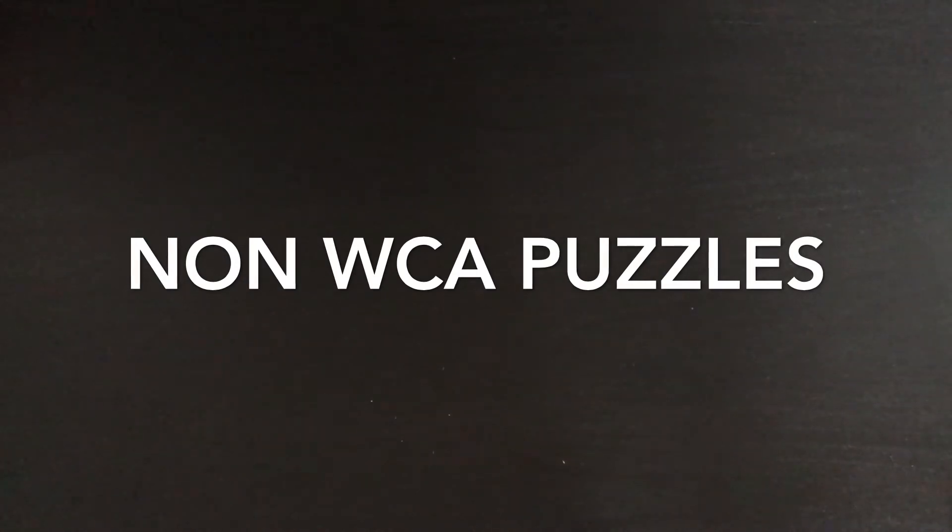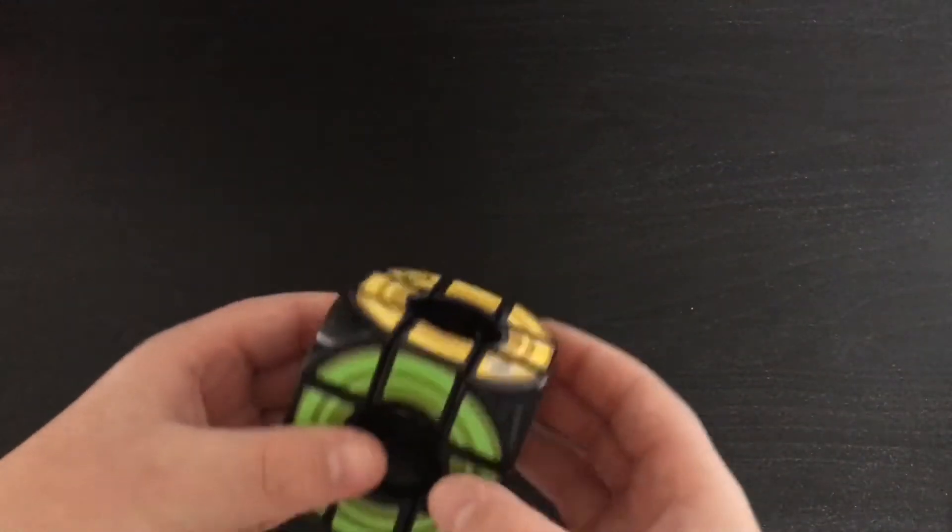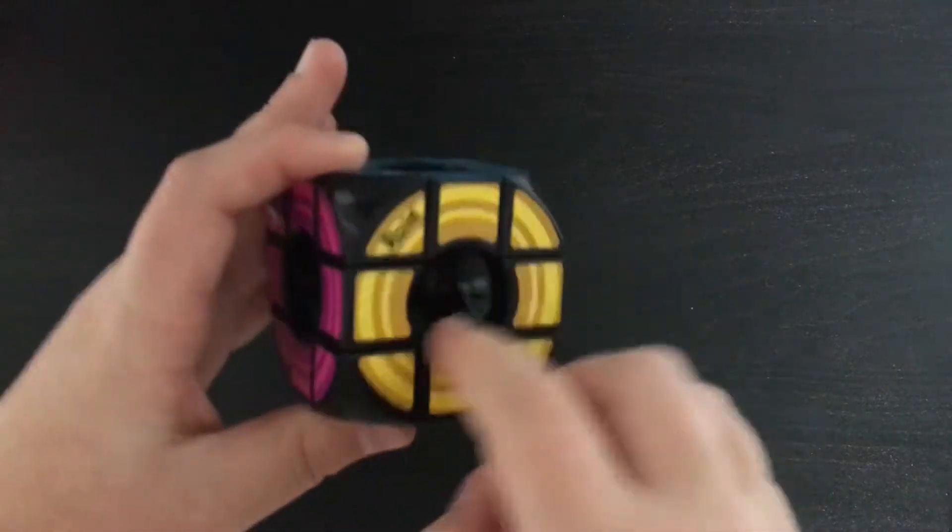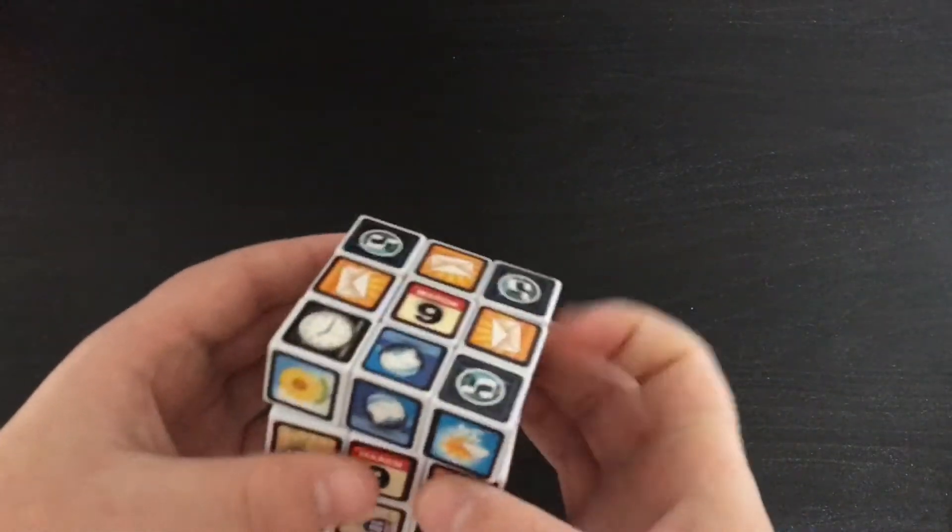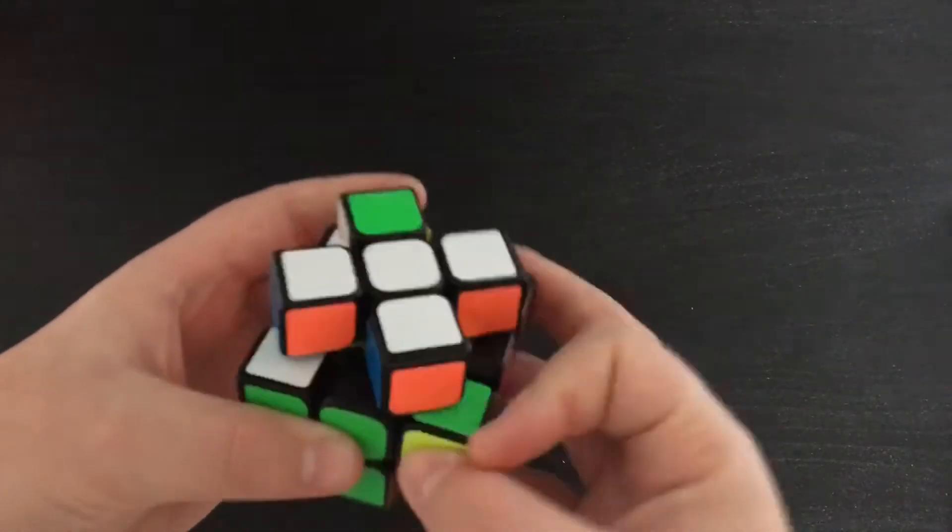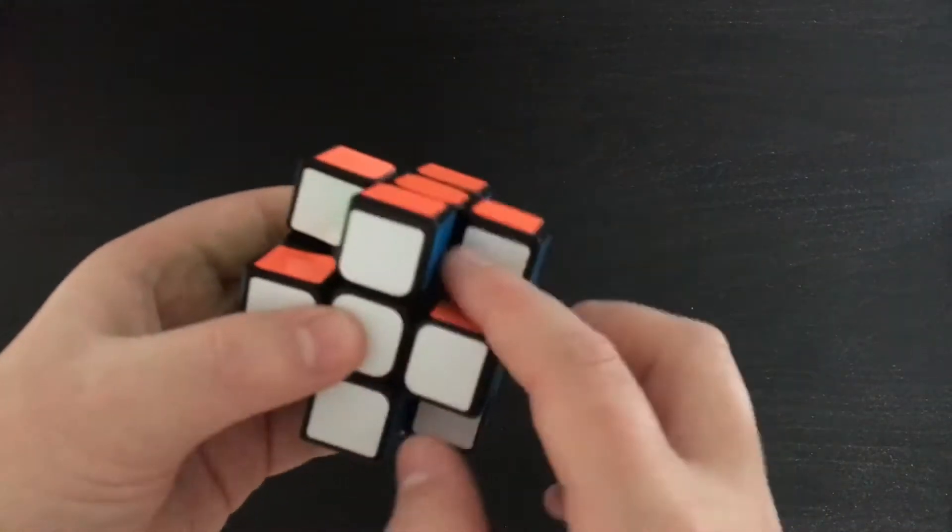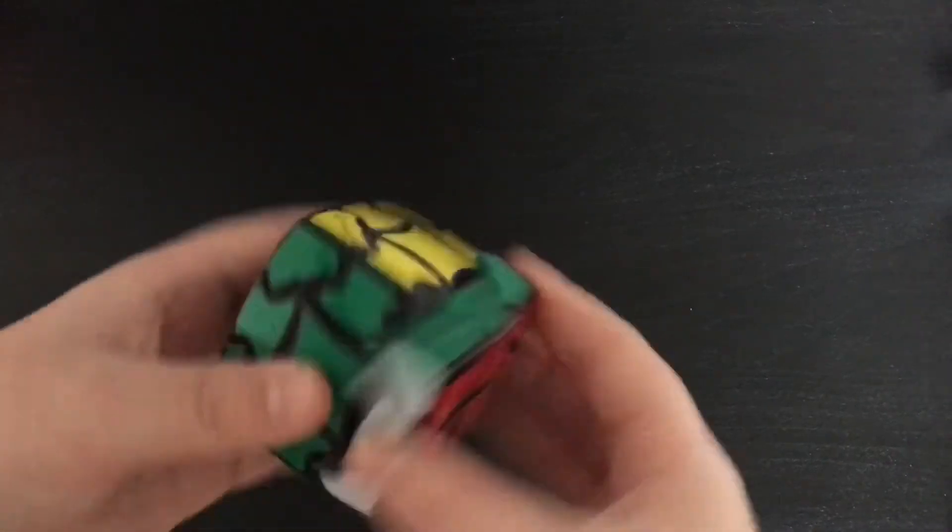So I will start with 3x3 shape mods or just 3x3 sticker mods. So the first one up is the Rubik's Void Cube, an iCube which is terrible, a Cross Cube I made out of a GuanLang, this is actually my first successful mod, and the Medford's Venus Cube.